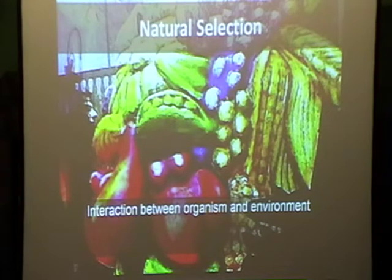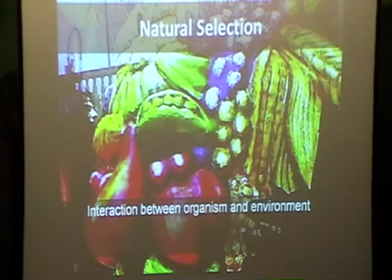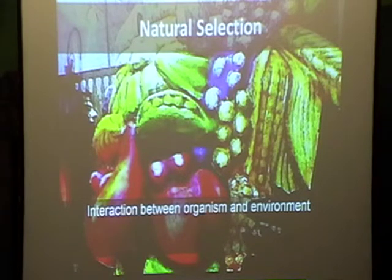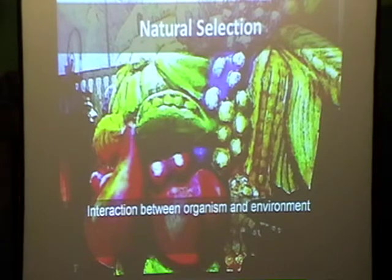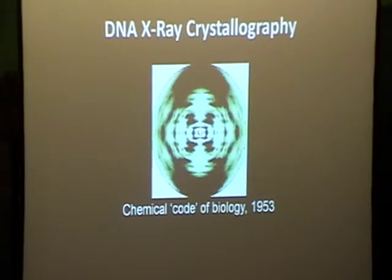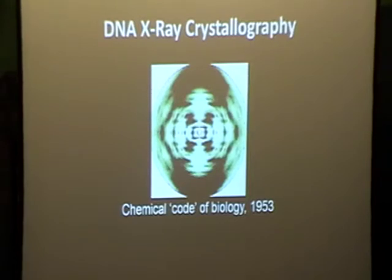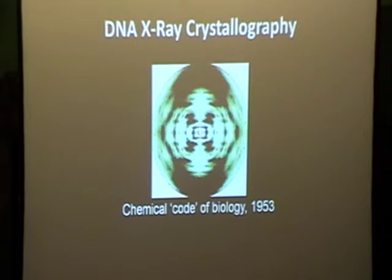What Darwin managed to do was to express a philosophy and a relationship which has enabled modern science to develop technologies that allow us to influence and modify evolutionary processes. Of course we've always had the ability to choose partners and selective breeding of animals — this engagement with fate and our desire to influence our future has been with us as part of our culture ever since we can remember. So the next part of the story happens around about 1953 when Watson, Crick and Wilkins discover the structure of DNA.